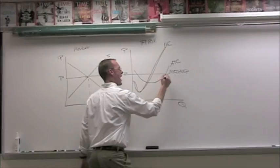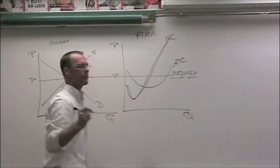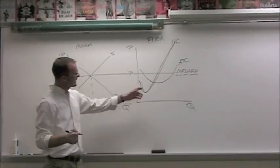Crossing MR equals AR equals P, yeah, and the minimum ATC.